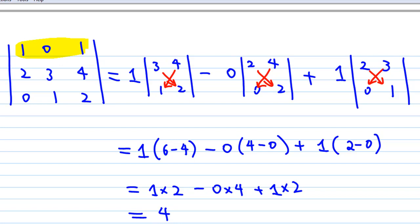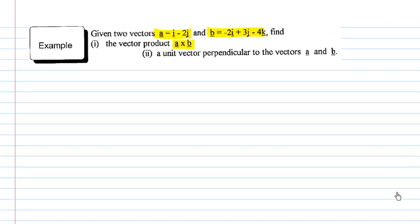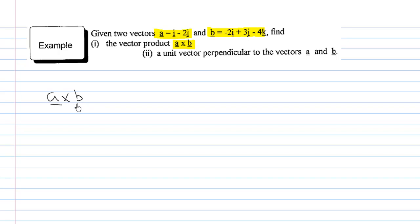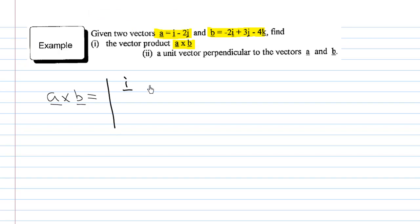Now we can use this to compute the cross product of two vectors using a 3 by 3 determinant. Here is one example: given vectors a equals i minus 2j, and b equals minus 2i plus 3j minus 4k, find the vector product a cross b. For computational purposes, a cross b is a 3 by 3 determinant with i, j, k in the first row, components of a — which are 1, minus 2, 0 — in the second row, and components of b — minus 2, 3, minus 4 — in the third row.